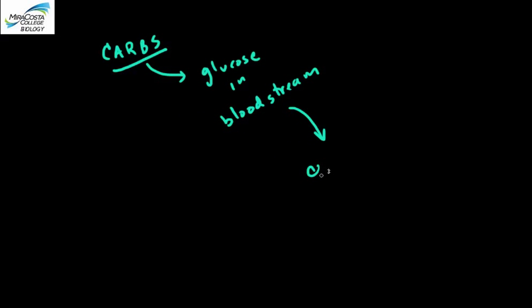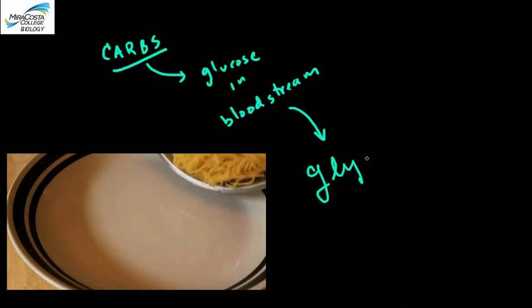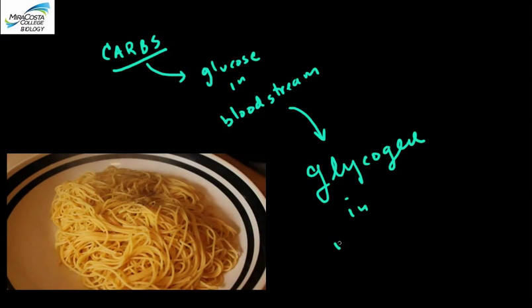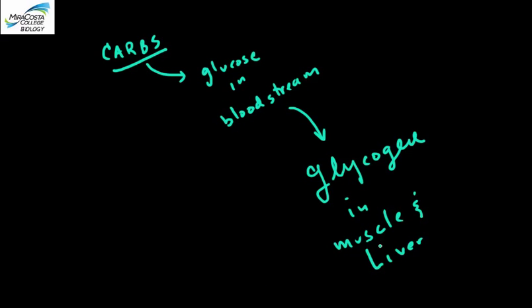And as far as carbs are concerned, you know that our bodies have stores of a polysaccharide called glycogen in muscle and liver cells, so an excess of glucose in the bloodstream could be made into glycogen by regular dehydration synthesis.